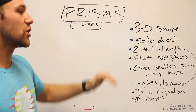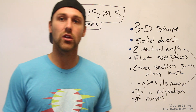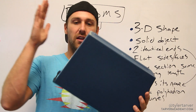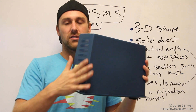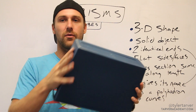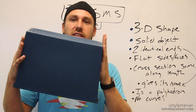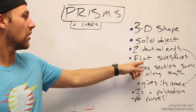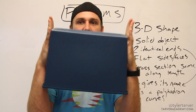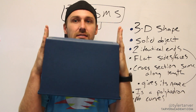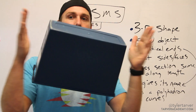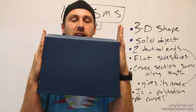A prism has two identical ends. For instance, this one has a rectangle — a trapezoidal rectangle — so it's got a rectangle on this side and a rectangle on that side. It also has flat sides, or faces. These would be the bases — I'll talk about that in a second.